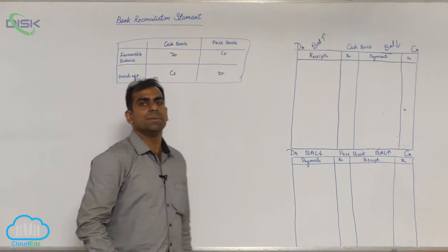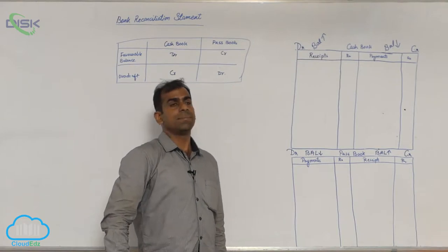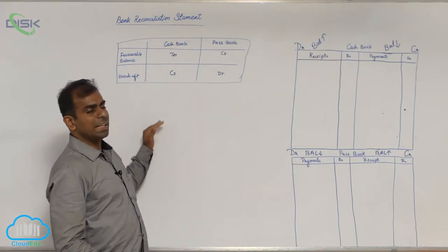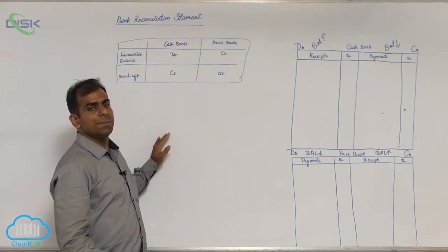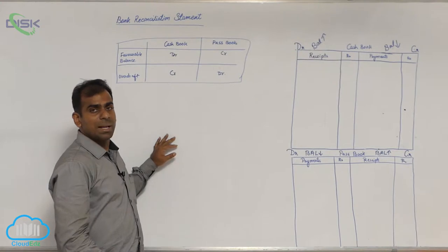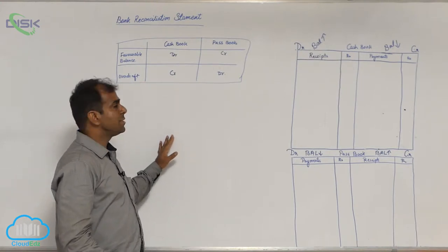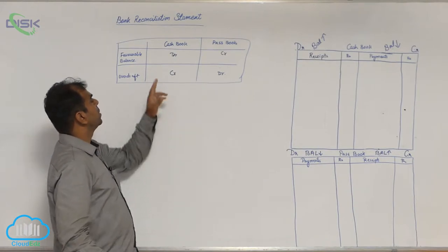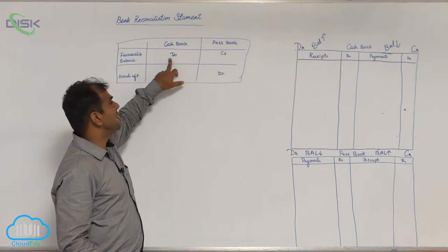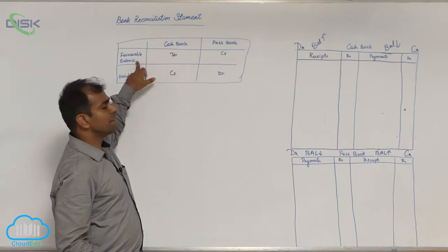Before moving on to the problems, we need to know some important points. Generally, when you maintain your cash book, how do you know whether your cash book tells you whether you have money in the bank or not? When you balance your cash book and you get the bank column balance as a debit balance, then we say it is a favorable balance.